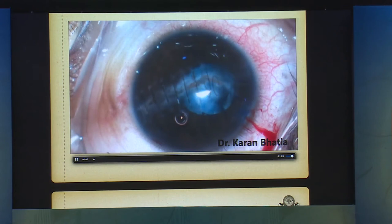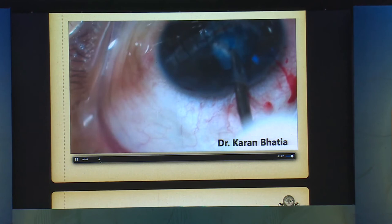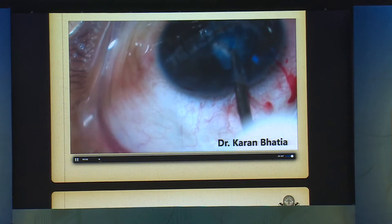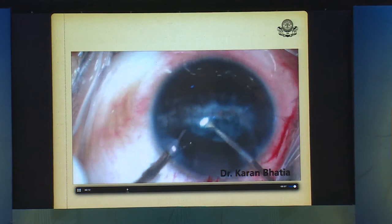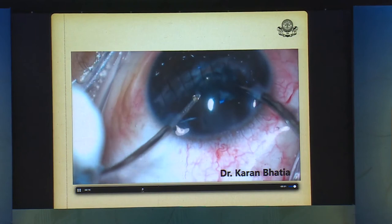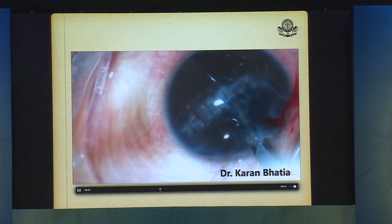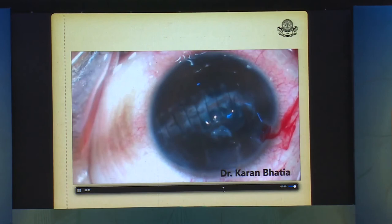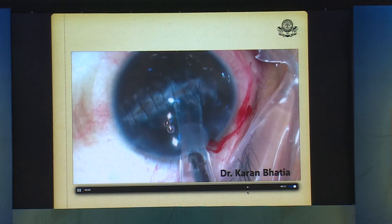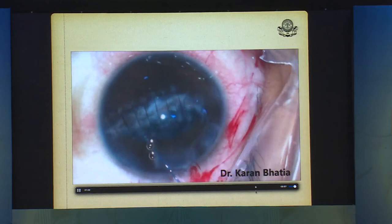Here is a secondary IOL being implanted after the primary repair was done. The adhesions are very hard — sometimes you need Vannas scissors to cut them. After the aspiration, you may find plaques that require OVD injection underneath to develop the plane, then cut with Vannas scissors and peel like a capsulorhexis. Once a good central area is obtained, synechiae can be released. Iris hooks can be used if pupil visualization is poor, followed by implantation of a three-piece IOL.